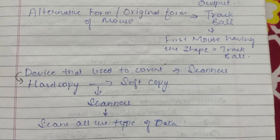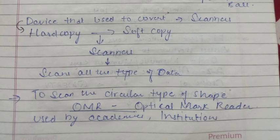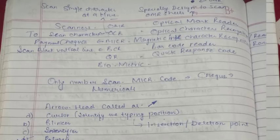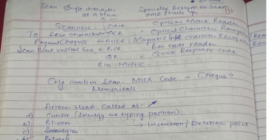Devices used to convert hard copy to soft copy are known as scanners. They scan all types of data. To scan circular-type shapes we use OMR — Optical Mark Reader — used by academics and institutions. Other types of scanners are OCR — Optical Character Reader — and MICR — Magnetic Ink Character Recognition.